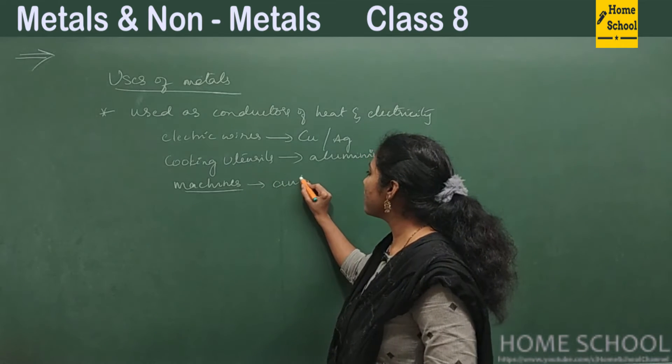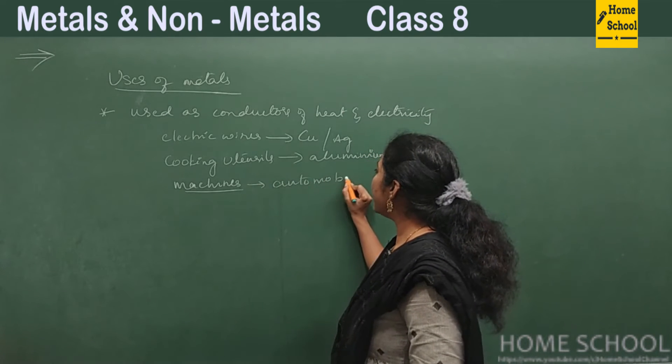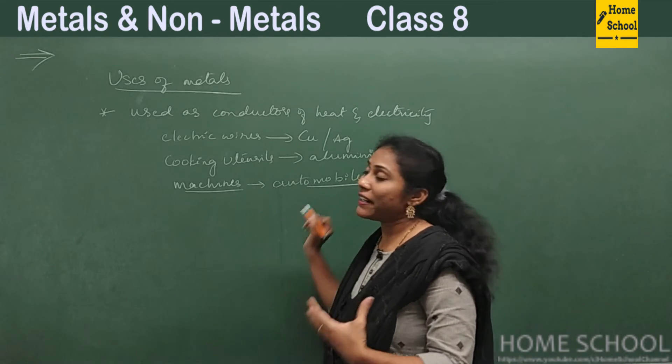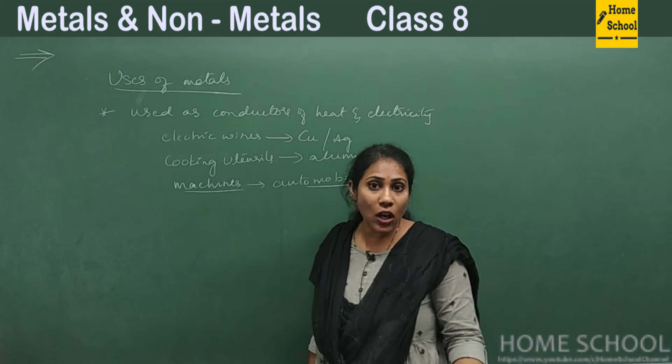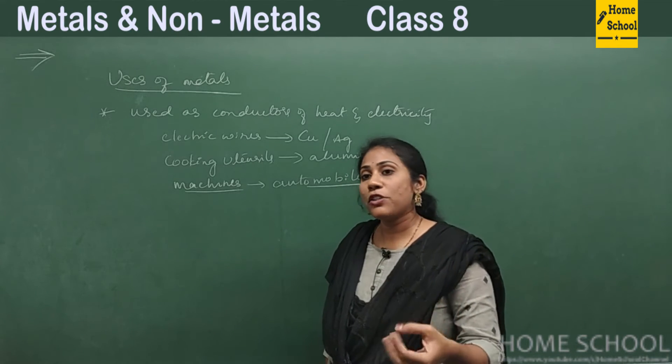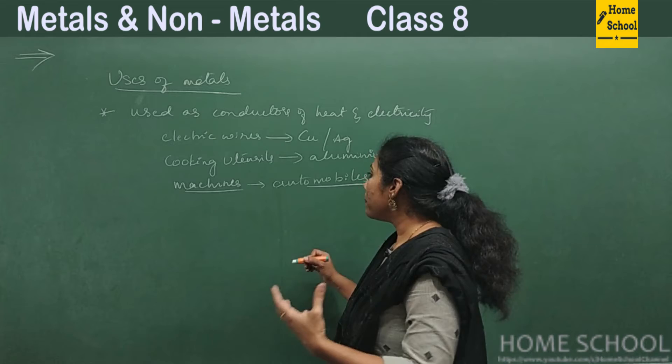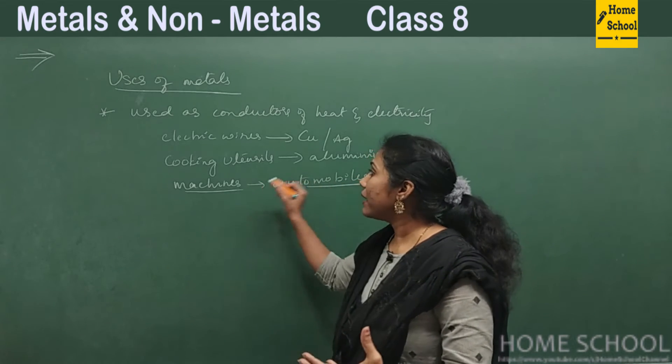So the body parts of automobiles are made up of metals only because iron is very strong. Because of its strength, most of the body parts are made up of these metals, particularly iron.